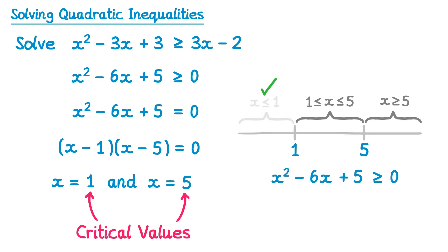We can then try the next section. We need a number that's in between 1 and 5. I'm going to choose 2. So if we substitute 2 in, we get 2 squared, minus 6 lots of 2, plus 5. 2 squared is 4. Negative 6 times 2 is negative 12. And then if we do 4 take 12, add 5, we get negative 3. Now is that greater than or equal to 0? No. So this section will not form part of our answer.